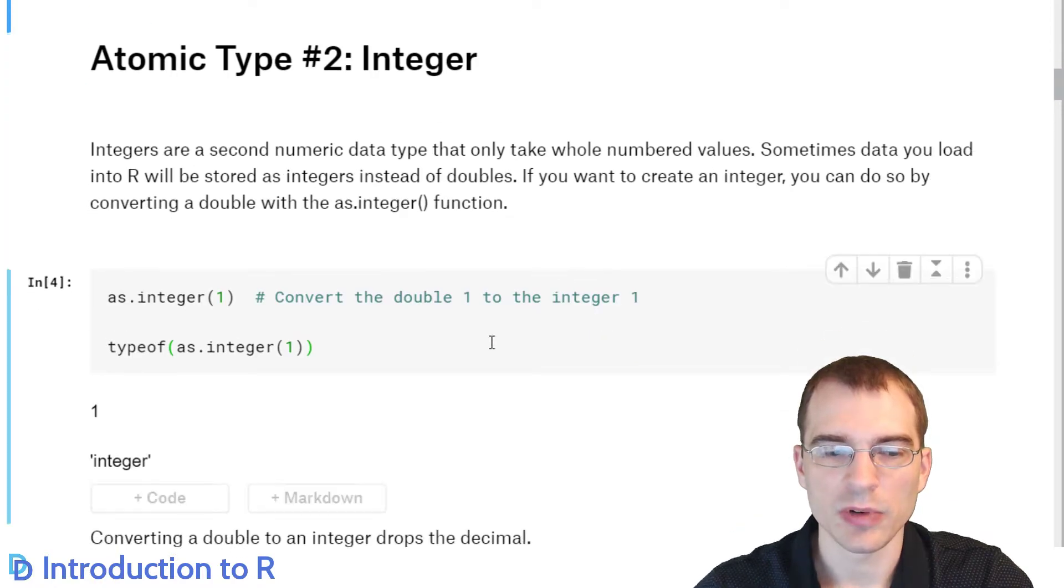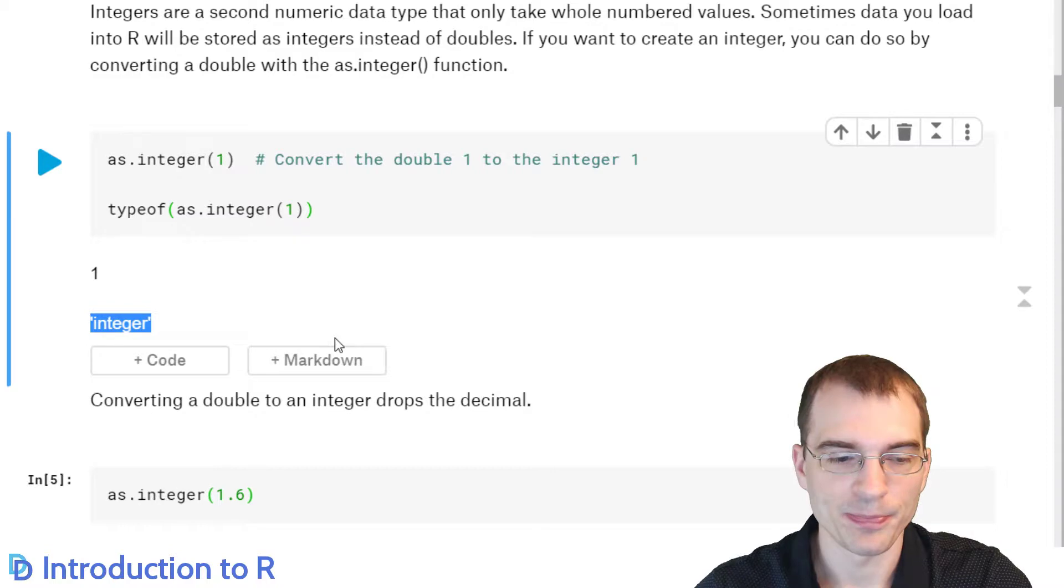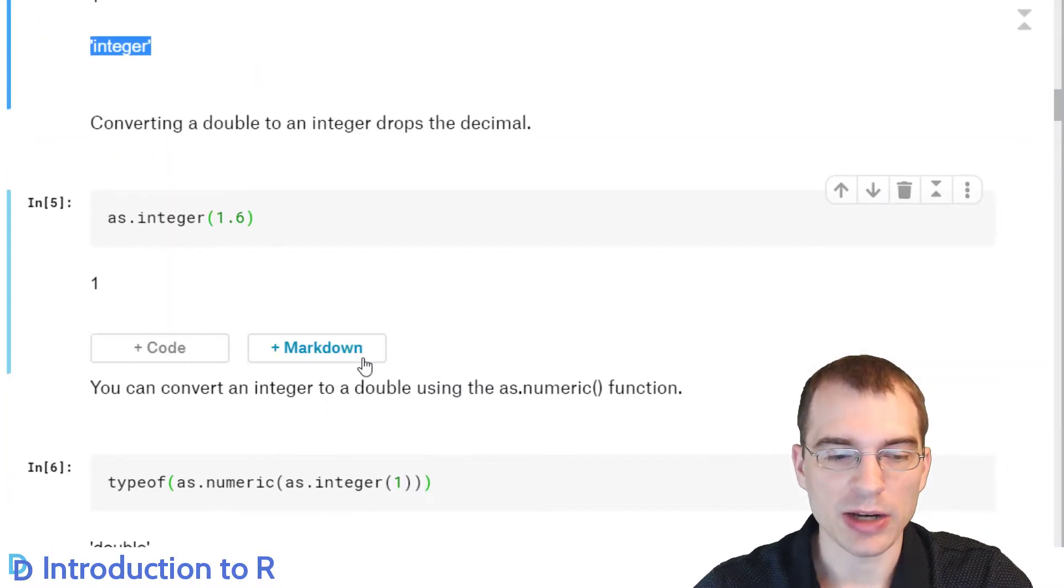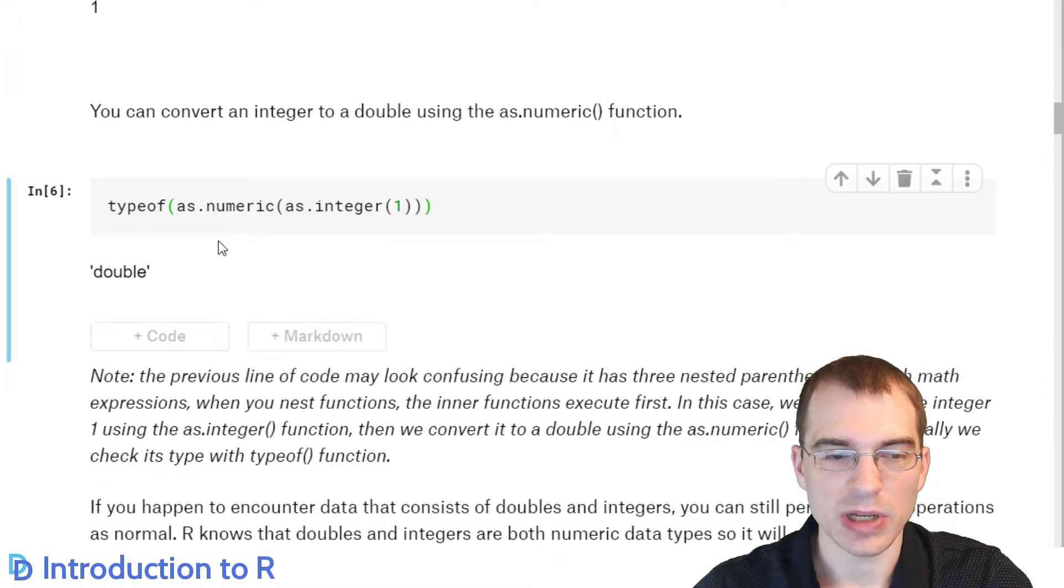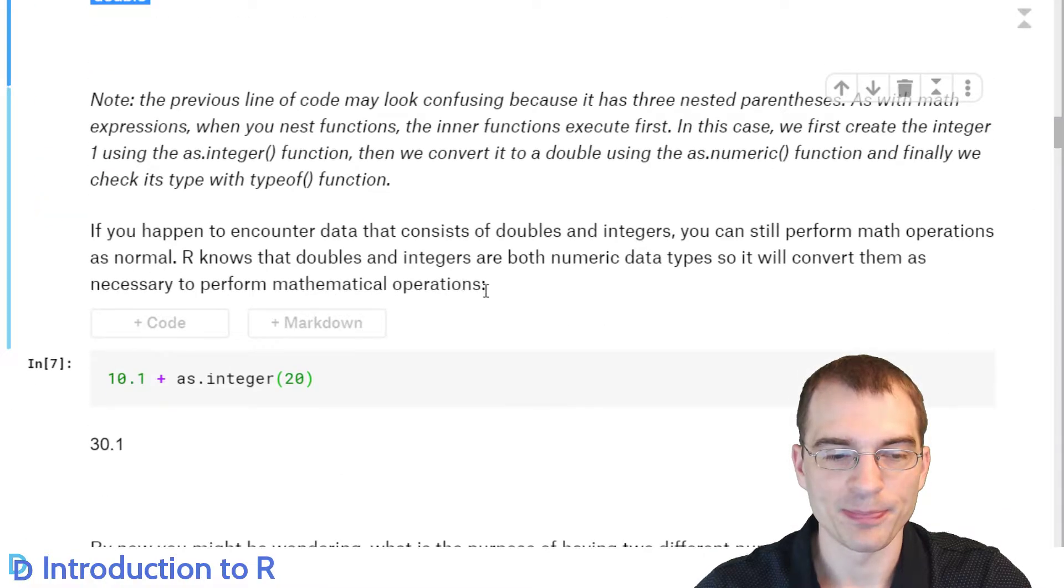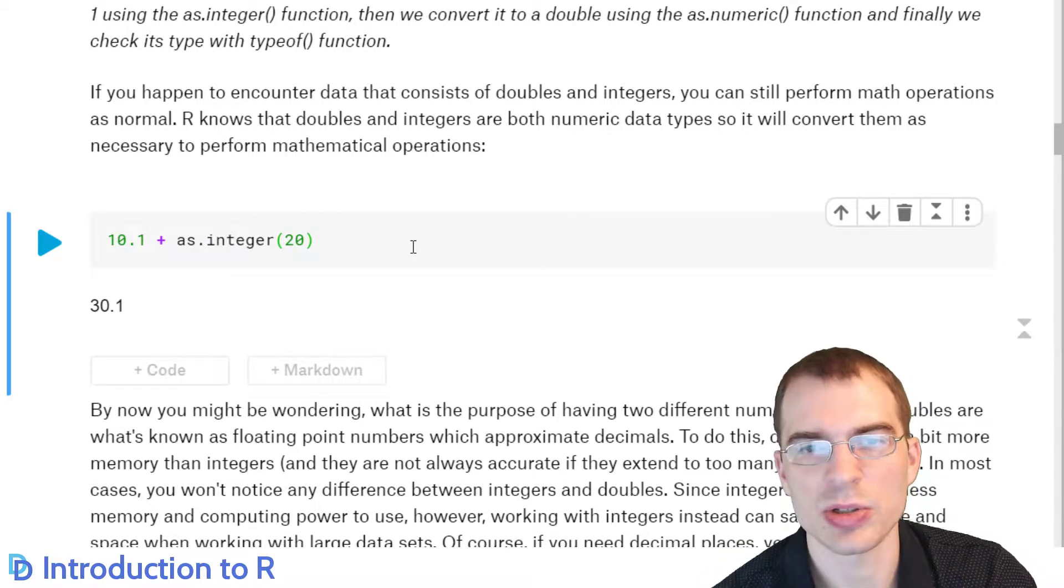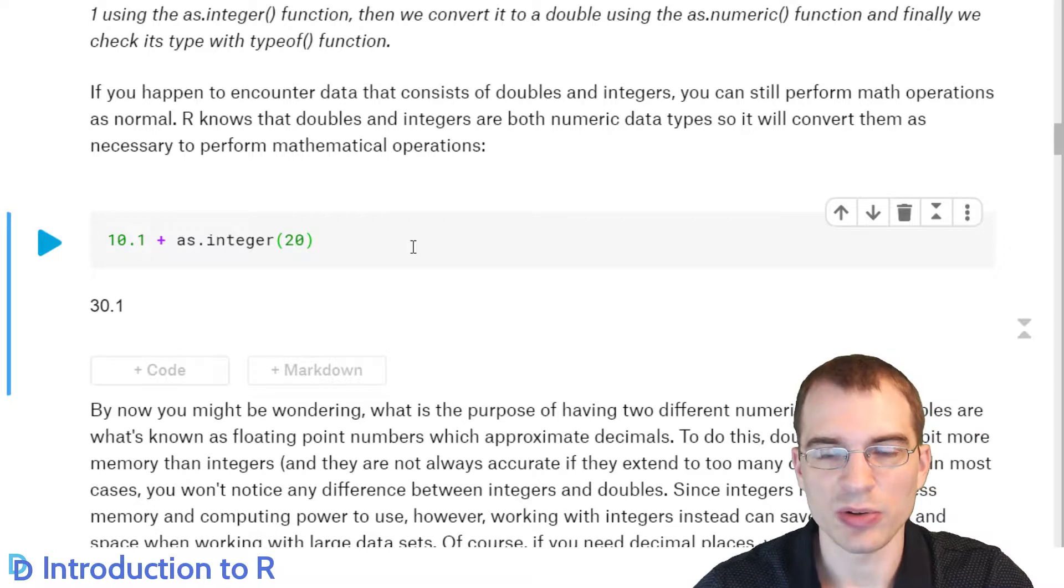So the second data type for numbers is integer. An integer is just a whole numbered value that has no decimal component to it. And you can convert doubles into integer with the as.integer function here. So when we do that and check the type, it should be integer. We can see here that it is. And you can convert a double back to an integer with the as.numeric function. So down here we have typeof as.numeric as.integer 1. So we're converting the one to integer, but then we're converting it back with this function. So the end result is that it's a double again. And you can do operations with both doubles and integers at the same time. It will just convert the result into a double. So here we're adding the integer 20 to 10.1. You can see the result is 30.1, which is a double.